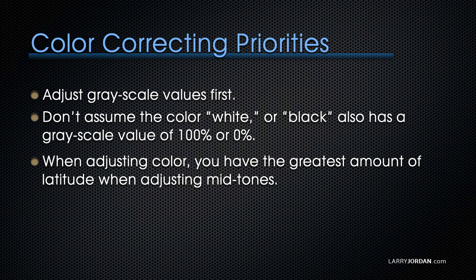Don't assume the color white or black also has a grayscale value of 100% or 0%. Imagine yourself wearing a pure white t-shirt and you go into a darkened closet. The white color of your t-shirt hasn't changed, but it's not bright — there's no light hitting it, which means it doesn't have a grayscale value of 100%. The color is white, but it isn't grayscale white. Also, as we discussed, when adjusting color we have the greatest latitude when adjusting mid-tones, so we want to work with mid-tones as much as possible.